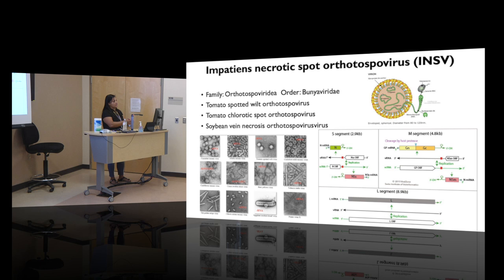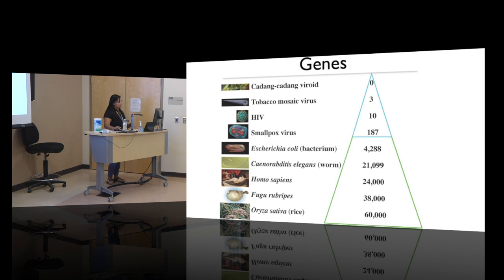Closely related viruses include tomato spotted wilt orthotospovirus, tomato chlorotic spot orthotospovirus, and soybean vein necrosis virus — all within the family Tospoviridae. To give an idea of how small viruses are: rice has 60,000 genes, humans have 24,000, E. coli has 4,000, and many viruses have 10 or fewer. Some viruses have no genes at all.